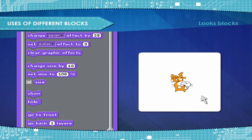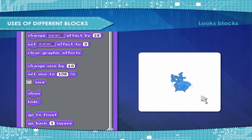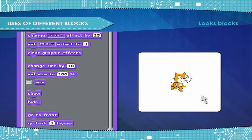Change effect by — changes the specified effect by the amount. Set effect to — sets the specified effect to the amount. Clear graphic effects — clears all graphic effects on the sprite.